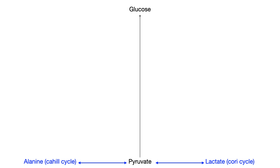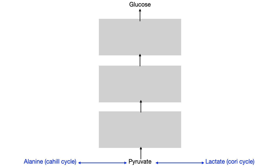In gluconeogenesis, it is glycolysis in reverse — every single step going back up from pyruvate to glucose is the same step in reverse as glycolysis, with the exception of three steps. Because only those three steps are different, you only need to know these three steps. This is really all you need to know for USMLE or COMLEX.